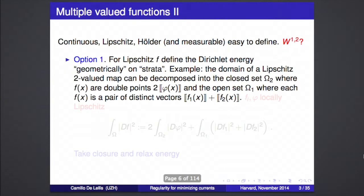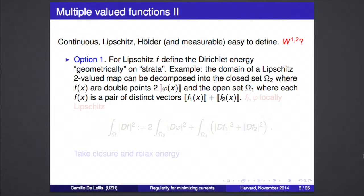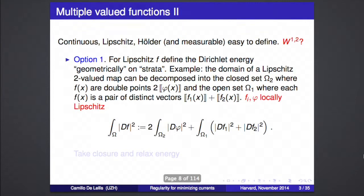Once you have this object, it's easy to understand what a Lipschitz function is, what a Hölder function is, a continuous function, a measurable function. But what is the Dirichlet energy? Let us first fix a Lipschitz map F before worrying about W^{1,2}. Ideally you'd define the Dirichlet energy for a C¹ map, but we don't know what a C¹ map is here. So let us fix the best approximation: a Lipschitz map, which is only a metric concept and can be defined on a metric space.